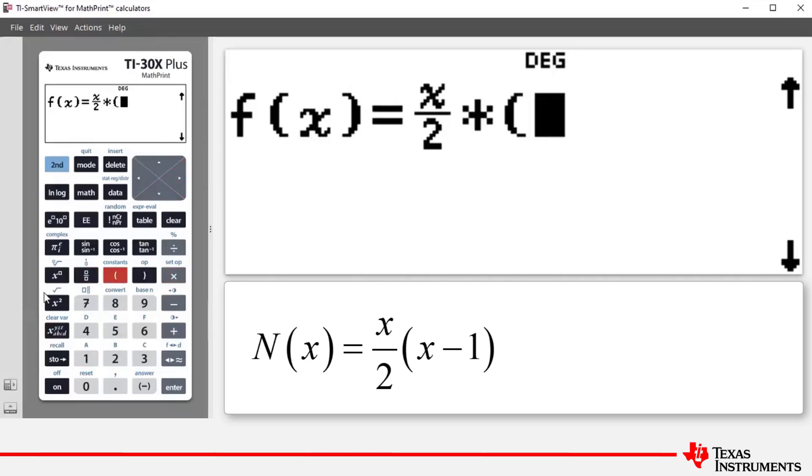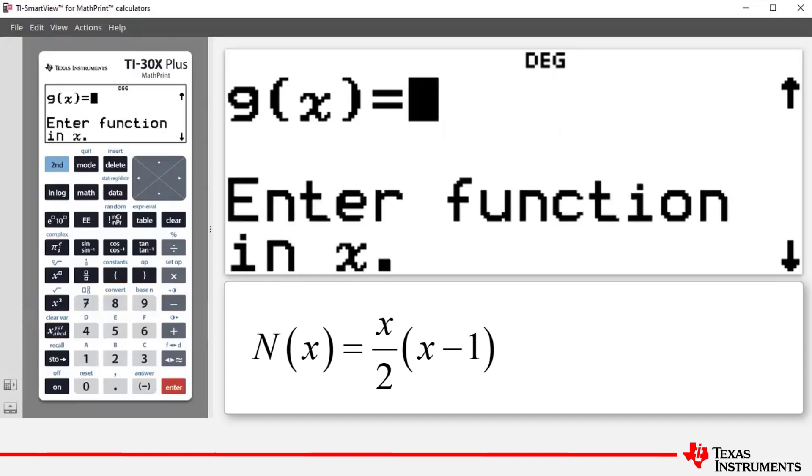Press the multiplication key, then open bracket, then the variable key to access x, the subtraction key, then press 1 and then press the closing bracket and press enter. So we have our function entered.